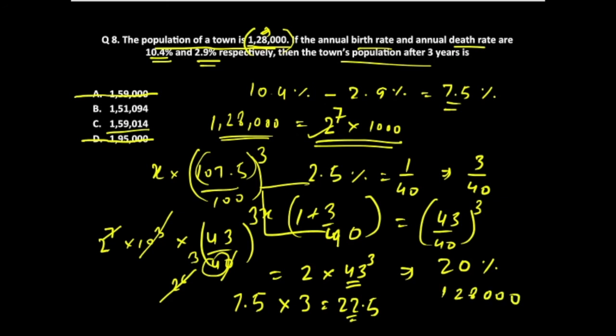And the 20 percent value of 128,000 would be somewhere around 25,600. And if you add these two, you'll get 153,000. So the answer would be something more than 153,000. We only have one option which is more than 153,000, that would give you option C.